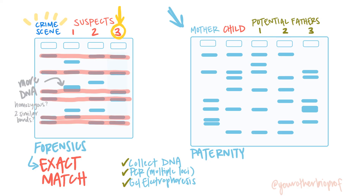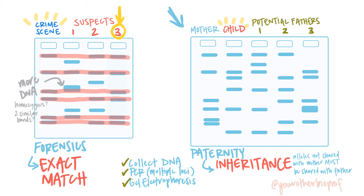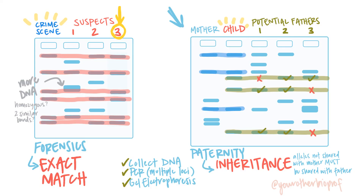Let's hop over to the paternity testing on the right. We've got a mother and a child and three potential fathers. Where this is different from forensics is that the STR alleles are inherited from the parents, so we're not looking for an exact match between the child and the father. The child inherits some of their alleles from their mother and some from their father. Any alleles they didn't inherit from their mother had to have come from the father, so alleles shared between mother and child aren't helpful here — we'll ignore those. The other alleles in the child's profile had to have been inherited from the father, so we're looking for a potential father who shares all of those additional alleles. The only one who does is number two. In reality we'd be comparing many more loci for more certainty, but this gives you a good idea of how the process works.